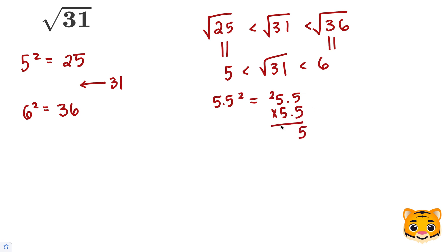5 times 5 is 25, carry the 2. 5 times 5 is 25, plus 2 is 27. Add our 0. 5 times 5 is 25, carry the 2, and then 5 times 5 is 25, plus 2 is 27. Adding these values together, we end up getting 30.25.